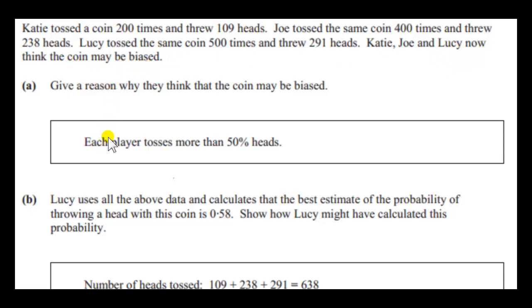So why is that the case? Well we can see that when Katie threw the coin more than half the time she threw heads. 109 is more than half of 200. Similarly when Joe threw the coin more than half the time he threw heads. Half of 400 is 200. He threw more than 200 heads as you can see. And similarly for Lucy. So this has happened three times. So there's a good chance that the coin is biased towards heads.